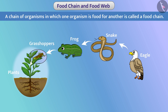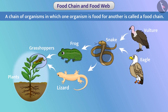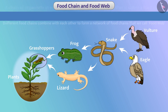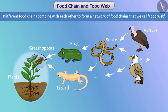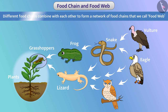The length of different food chains is also different. Basically, an organism eats more than one organism and is itself eaten by more than one organism. In this way, different food chains combine with each other to form a network of food chains that we call a food web.